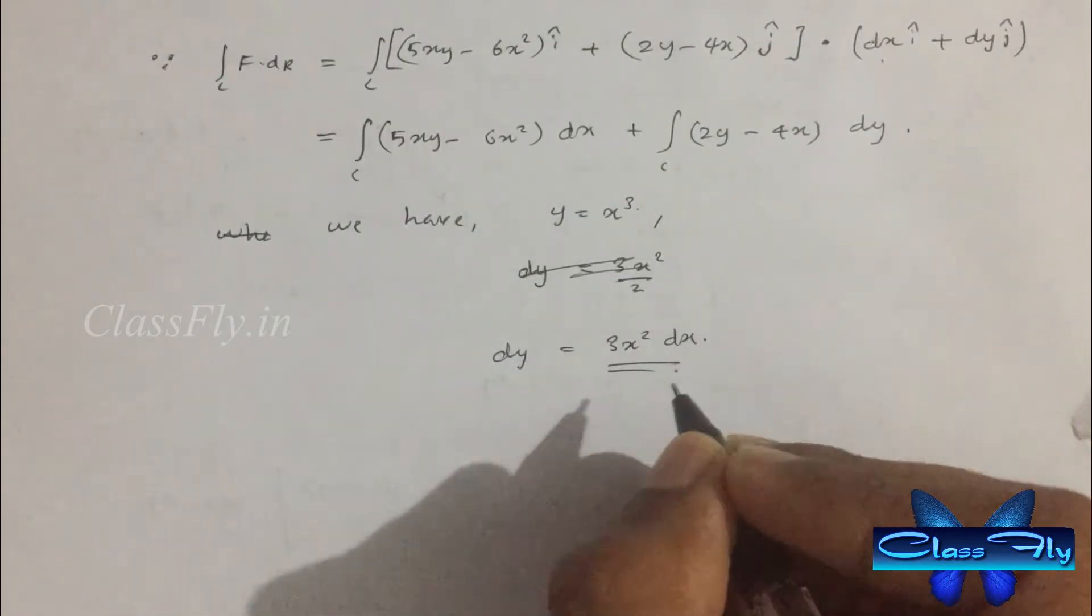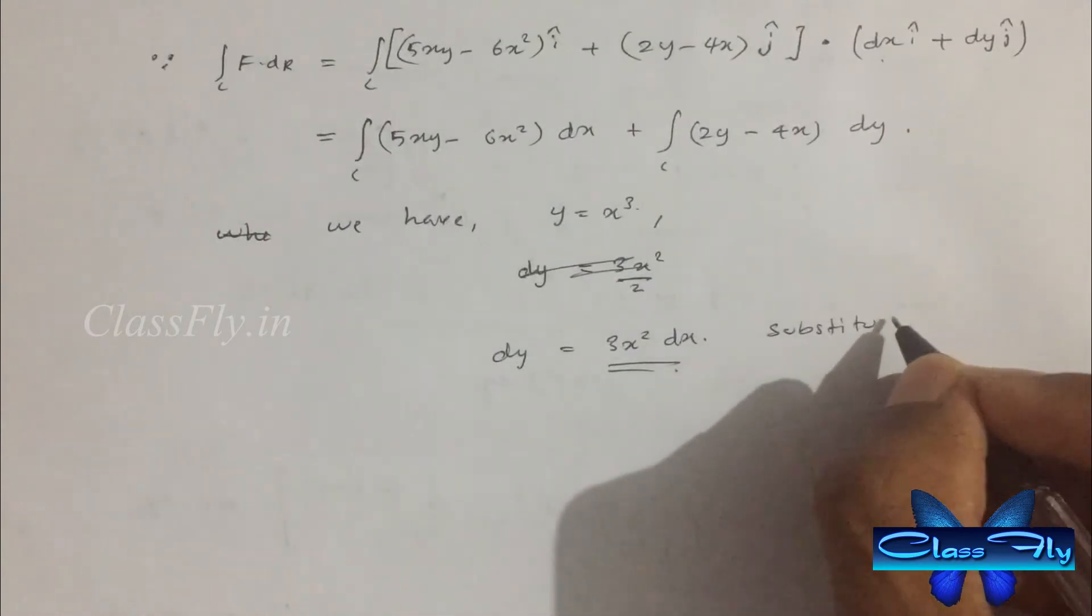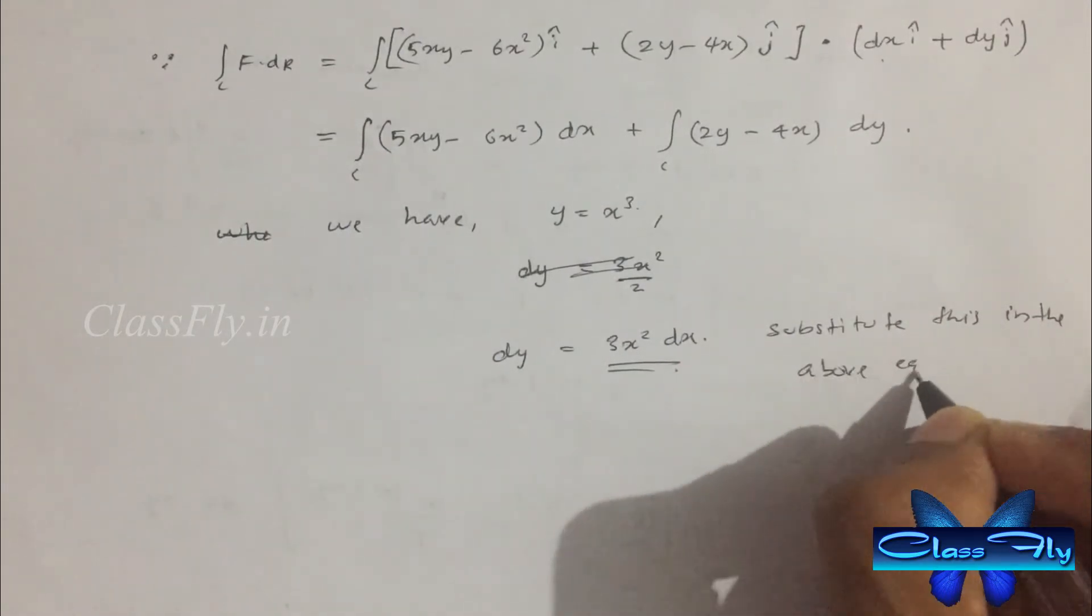For that we have y equal to x cube and dy equal to 3x square dx. Now substitute this in the above equation.